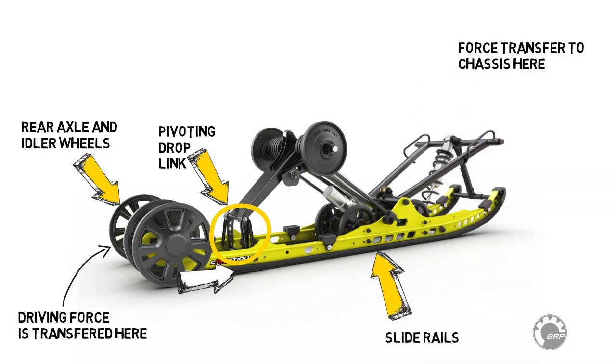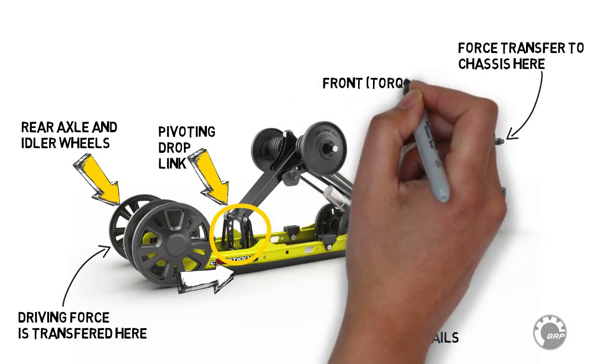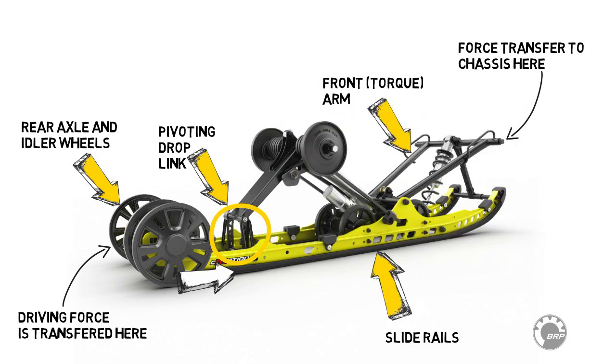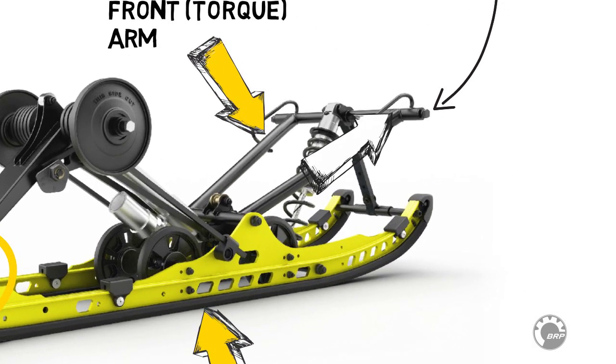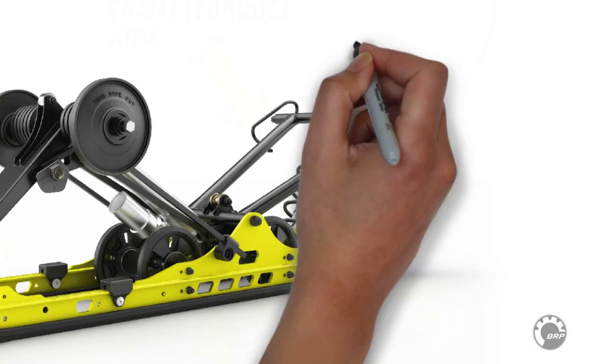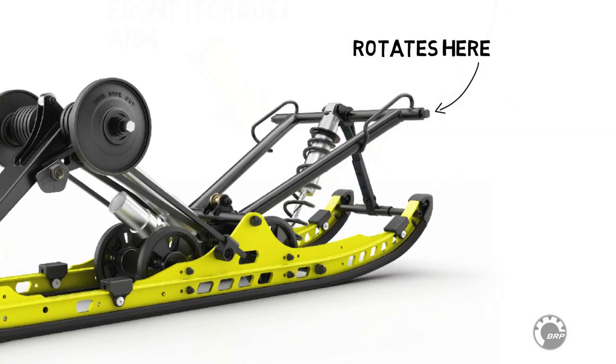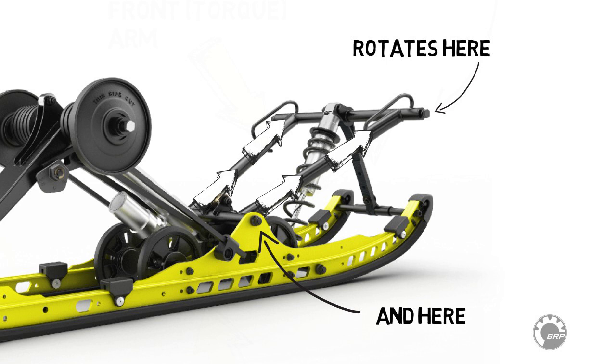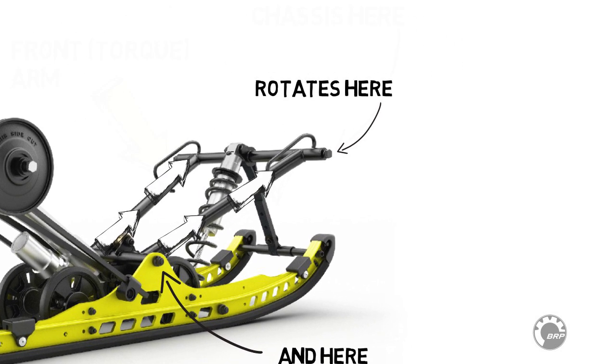All force from the track pushing the chassis goes through the front arm, which is why the front arm of a slide suspension is sometimes called a torque arm. Because the front arm can rotate at both the chassis and the slide rail end, force can only move along the front arm and can only push the chassis along a straight line drawn through the front arm.